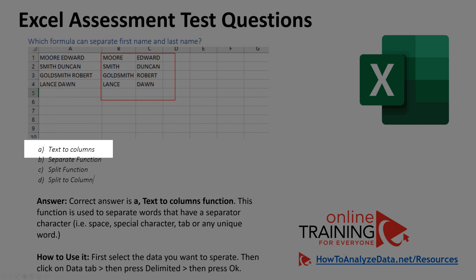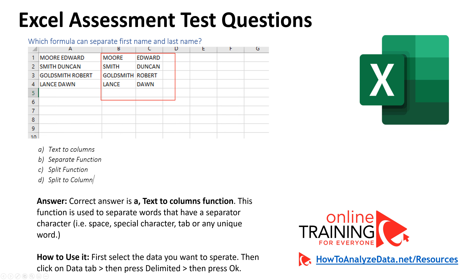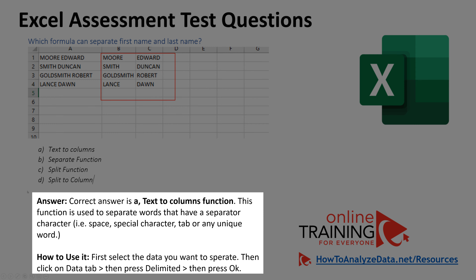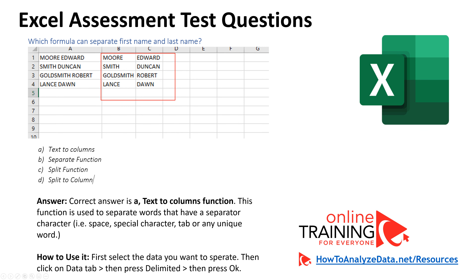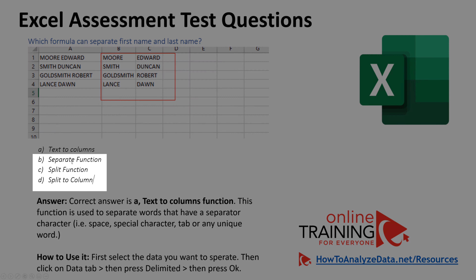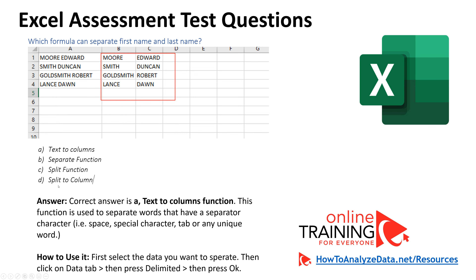The correct answer is A, text to column function. This function is used to separate words that have a separator character such as a space, special character, tab, or any unique word. Keep in mind that even though we call it a function, it is not really a function — it's a functionality. Other choices — separate function, split function, and split to column — do not exist in Excel. This question tests your knowledge of this particular functionality and whether you've used it as part of data conversion.